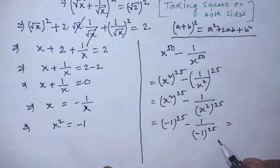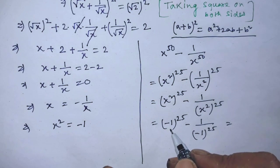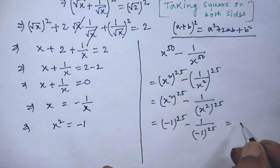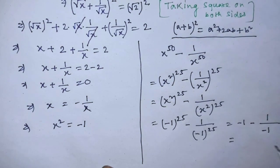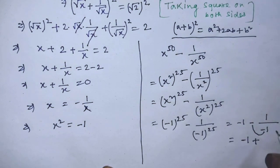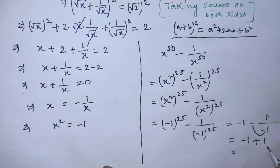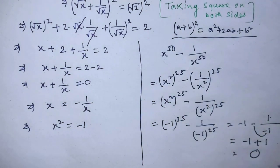In this expression, the power is 25, which is an odd number. So minus 1 whole to the power 25 equals minus 1. We then have minus 1 minus 1 over minus 1. A negative divided by a negative gives a positive, so 1 over minus 1 whole to the power 25 equals minus 1, making it minus 1 minus into minus, that is plus 1. Both numbers are the same but with opposite signs, so subtracting gives 0. The value of this algebraic expression is 0, and that is our final answer.